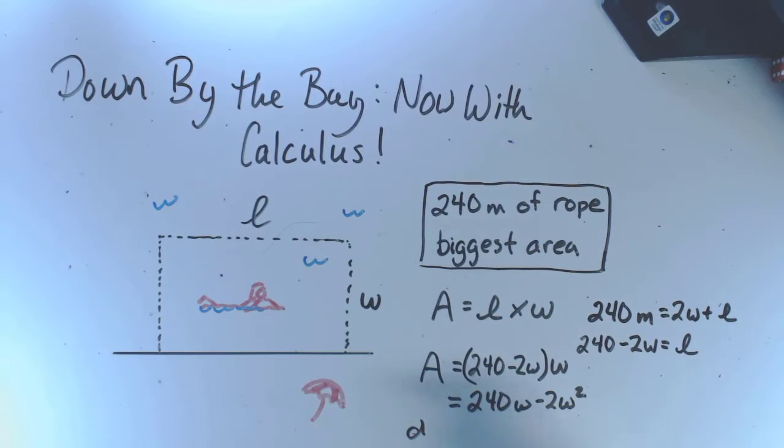When I take my derivative, I can do it with respect to the rate of change of W. And A prime is 240 minus 4W. Now I can set it equal to zero and find my width.